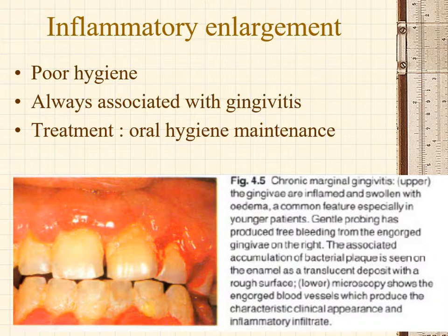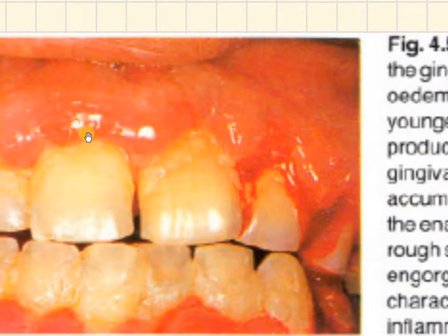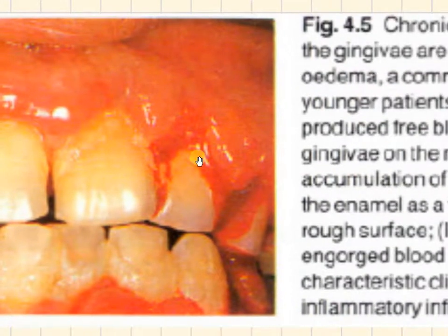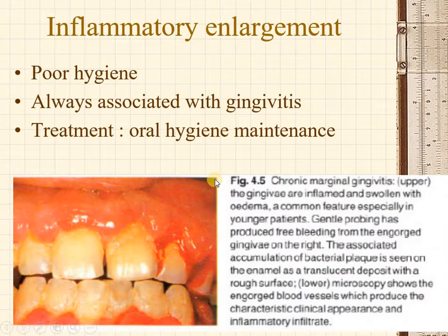As discussed, inflammation-induced gingival enlargement is the main cause of enlargement in the gingiva. As you can see in the picture, the margins of the gingiva are swollen. There is loss of stippling and the gingiva looks shiny. Most of the time there will be spontaneous bleeding or bleeding on probing. It is invariably associated with poor oral hygiene, hence the main treatment is to prescribe oral hygiene practices and relieve the symptoms.